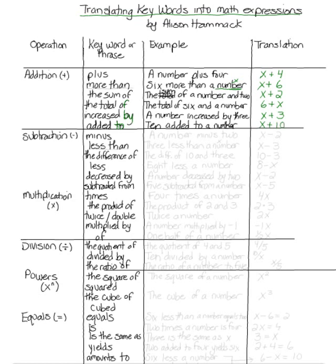So, the tricky ones in this list, more than tends to be one of the tricky, because it comes in reverse order. The 6 came first in the word problem, and yet the x will come first when we translate it.